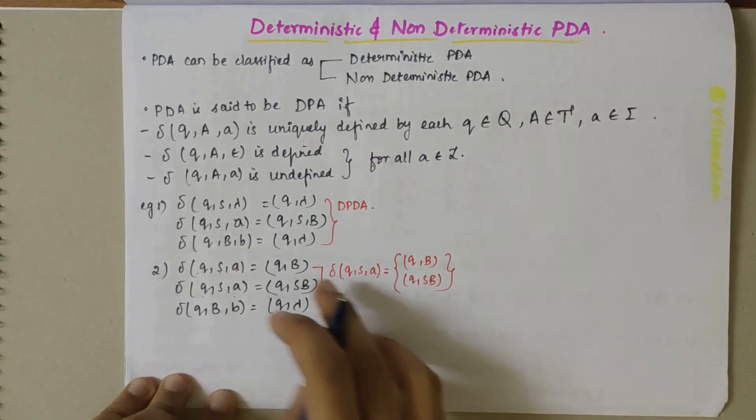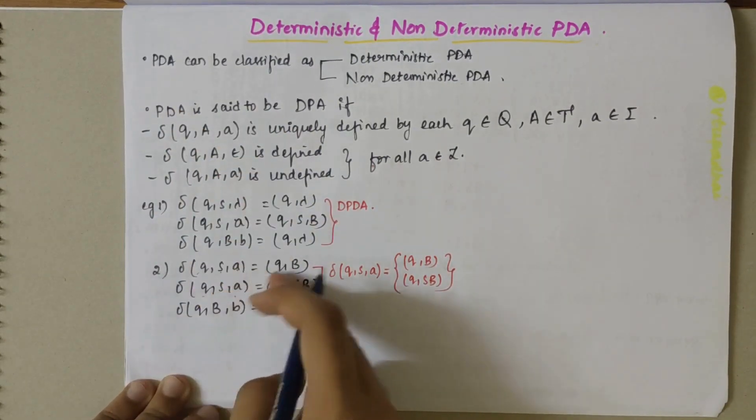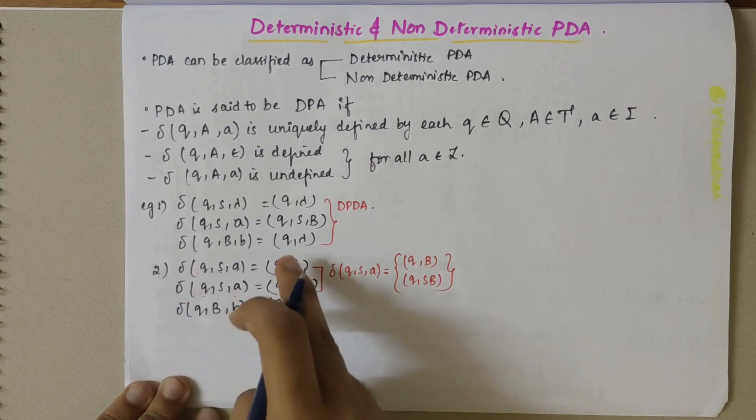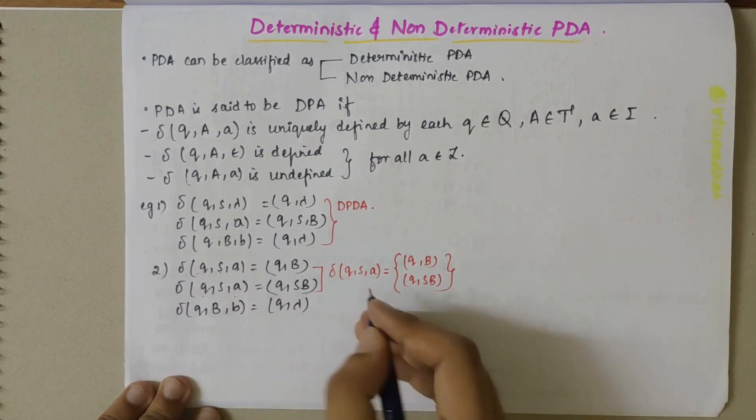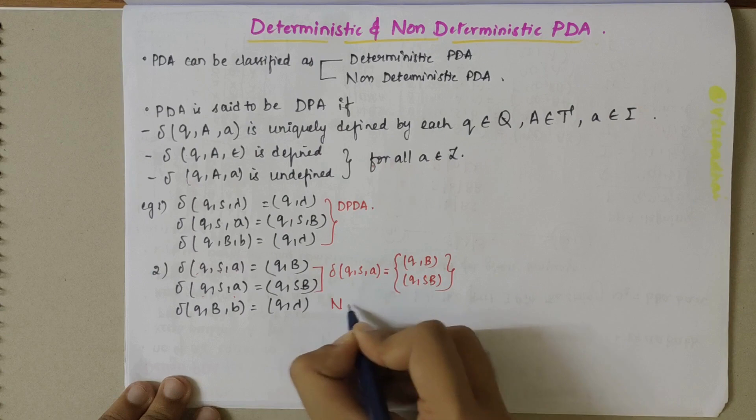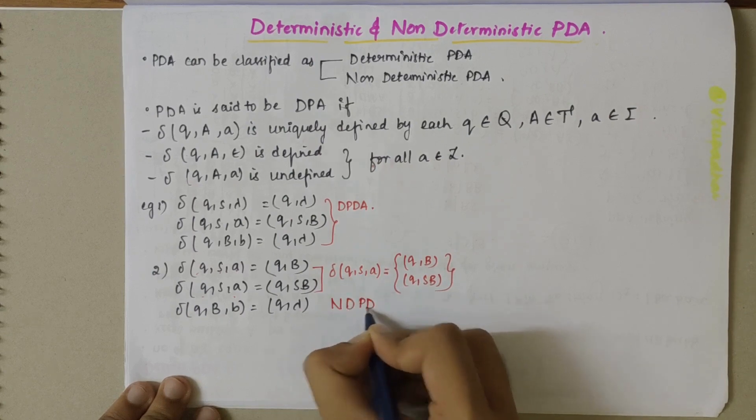When the PDA, when the transition functions are same, for one given transition functions there are more than one values here, so in this case it is said to be non-deterministic PDA.